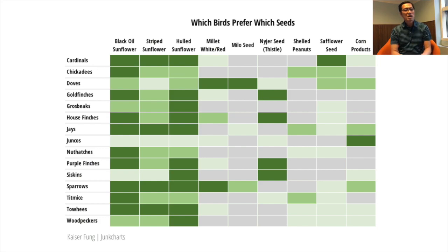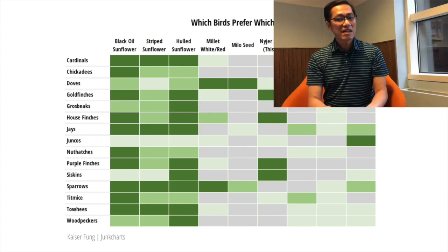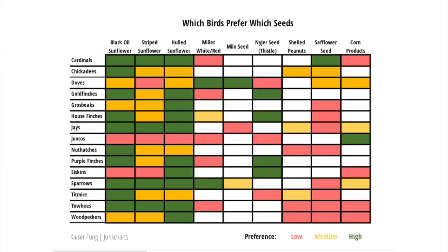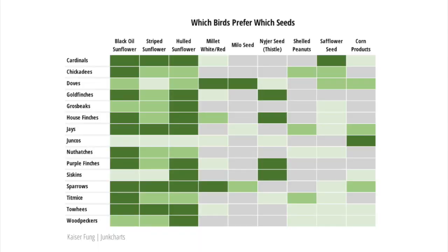Here is our revised chart. This design focuses your eyes on those dark green cells and answers the question: which bird prefers which seeds? I haven't used any fancy tools here — you can do all of this in Excel. Let me show you again: here is where we started, and here's where we ended up.